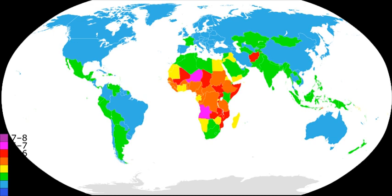Simon claimed that 'our species is better off in just about every measurable material way.' He also claimed that when considering a list of countries ranked in order by population density, there is no correlation between population density and poverty and starvation. Instead, if a list of countries is considered according to corruption within their respective governments, there is a significant correlation between government corruption, poverty and famine.